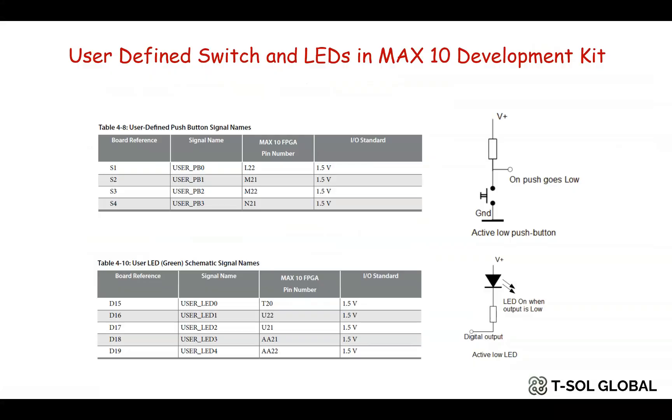Before going to the Quartus Prime we would like to discuss one thing which we realized during testing this example in Max 10 development kit: that the user defined push button switches available in the Max 10 development kit are active low, which means the switches are by default 1 and if you press them then it will give 0. Similarly the LEDs or the output LEDs also are active low. So if you define logic 1 or high in the port, the LED will go low or turn on. So to show the correct logic output we need to use an inverter at the output of the logic we develop. So be careful about this.